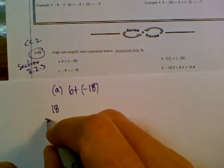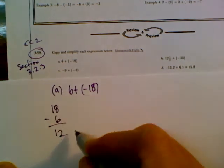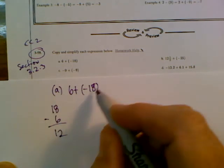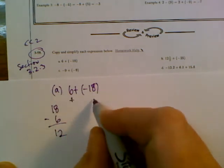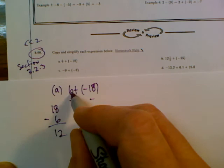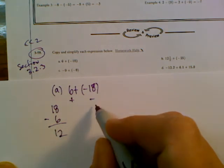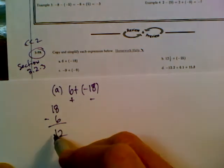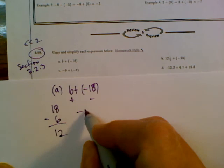So 18 minus 6, and we get 12. And then we look to see what do we have more of. Do we have more positives or more negatives? Well, there's 6 positives, 18 negatives. So there's more negatives, so my final answer would be negative 12.